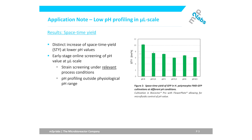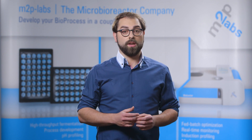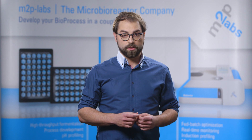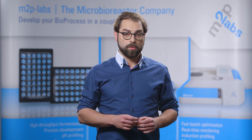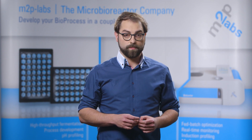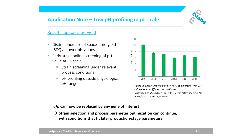So, the use of low pH optodes paved the way for relevant yeast strain and cultivation parameter screening under conditions similar to the later pilot and production stage, without having a screening bias due to suboptimal pH. GFP could now, of course, be replaced by any other gene of interest, so that strain selection could continue anyhow.